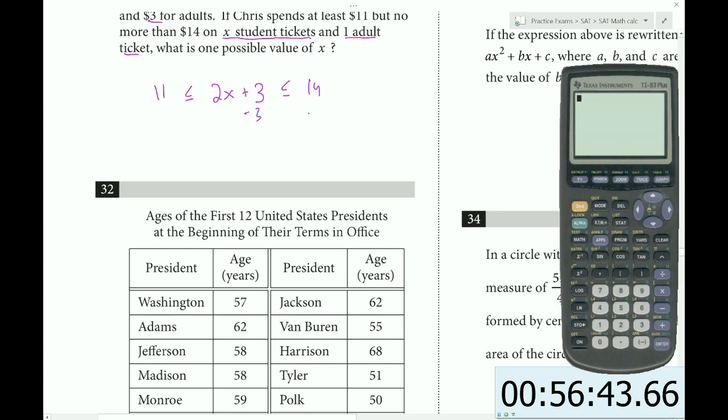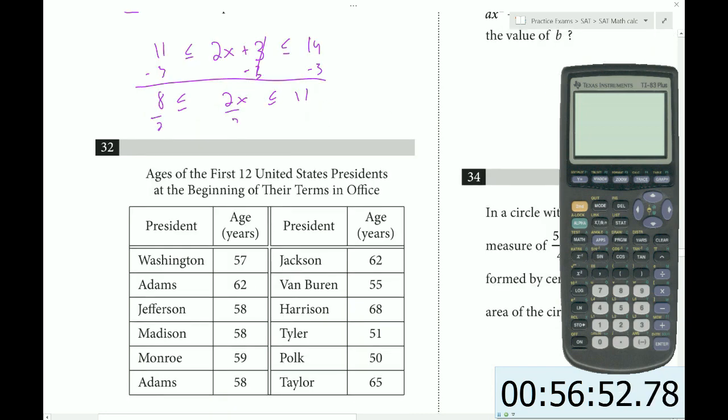He wants to spend at least $11 but no more than $14. We can solve this system by subtracting 3, then divide by 2. So we get 4 less than x less than 5 and a half. So let's choose x equals 5.